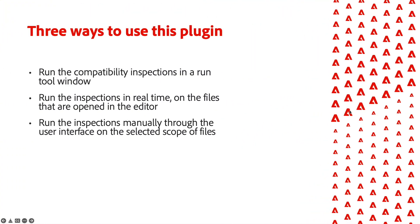This plugin can be used in three different ways. First, run the compatibility inspections in a run tool window. Second, run the inspections in real-time on the files that are open in the editor. And third, run the inspections manually through the user interface on the selected scope of files. Let's check them out.